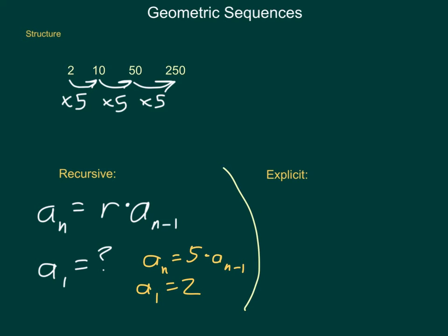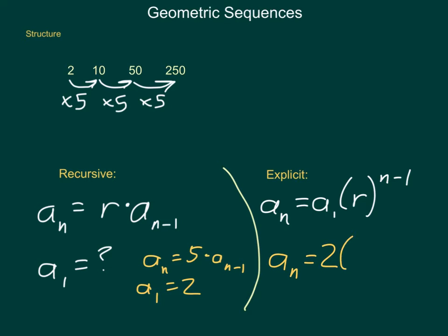For our explicit formulas in geometric sequences, a sub n — the term that I'm looking for — equals a sub 1, our starting value, times r to the n minus 1 power. You can see we have a lot of structure similar to what we get when talking about exponential functions. r is how we multiply from item to item, and repeated multiplication is just exponents. In an explicit formula, you don't have to provide a separate starting value because that's embedded with our a sub 1. So, using this sequence: a sub n equals 2 times 5 to the n minus 1 power.